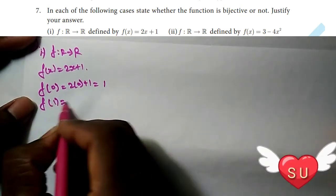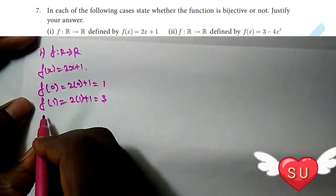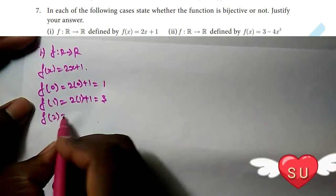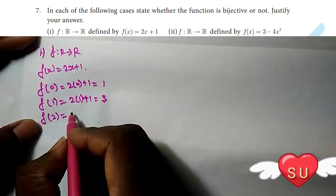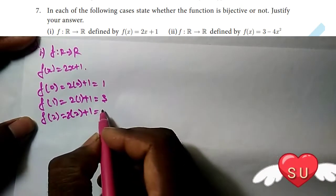Next, f(2) = 2(2) + 1 = 4 + 1 = 5. For f(-1) = 2(-1) + 1.